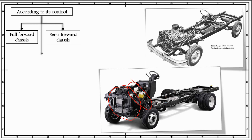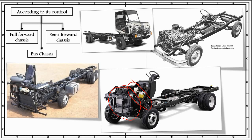The third classification according to its control is the bus chassis. In this type, the engine is fitted inside the driver cabin. Therefore, the extra space of the chassis can be utilized to increase floor area and accommodate extra seats. These chassis also allow the driver to see the road just in front of the front wheel, making driving easier and trouble-free compared to full forward chassis. An example of bus chassis is shown here — the engine is fitted in the driver cabinet right beside the driver. This is also another example of a bus chassis.